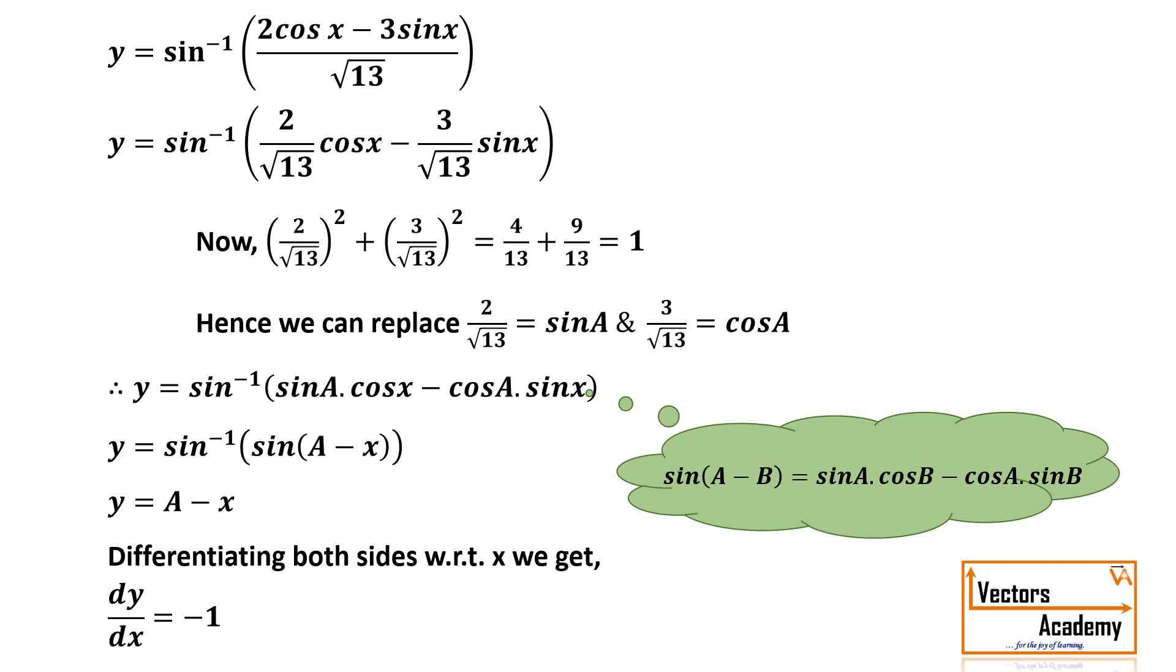So this is how we solve these type of problems. Now also pay attention why did I substitute 2 by root 13 as sin a and 3 by root 13 as cos a and why not the other way. Once you get the answer for this question you'll be able to solve these questions on your own.